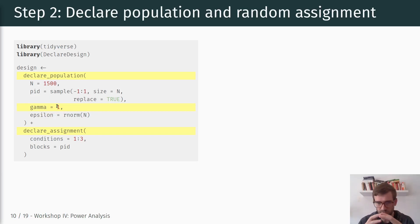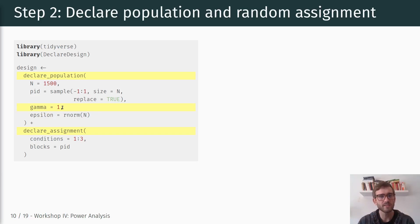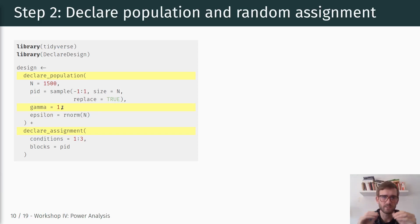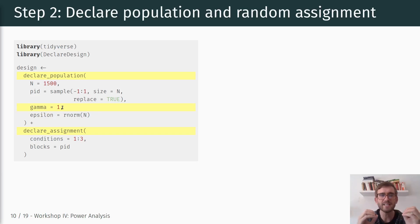For illustrative purposes, I'm setting this gamma parameter equal to one just to show you the result of each step of the design declaration. Later on, we're going to run the same code but specify varying levels of gamma to analyze our design for varying effect sizes of that treatment. For now, we're just assuming it's one in order to show you each individual step and what's actually going on under the hood as you add layers to this design declaration.